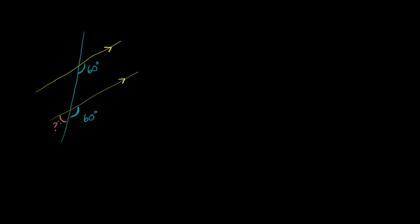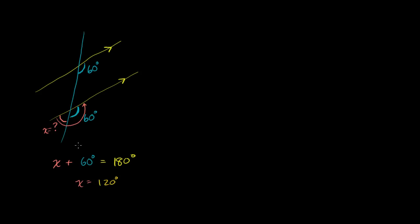Now, if this angle is 60 degrees, what is the question mark angle? The question mark angle — let's call it x. The question mark angle plus the 60 degree angle, they go halfway around a circle. They are supplementary and will add up to 180 degrees. So we can write x plus 60 degrees equals 180 degrees. Subtracting 60 from both sides, you get x is equal to 120 degrees.